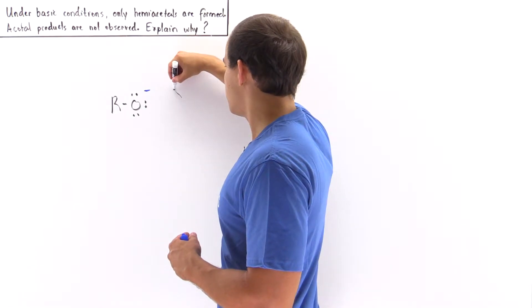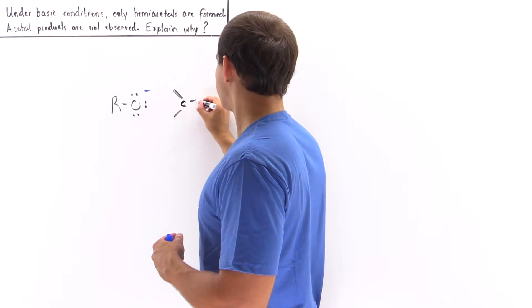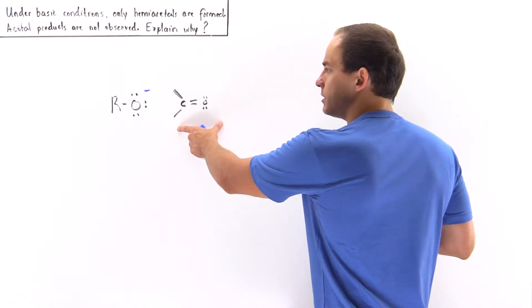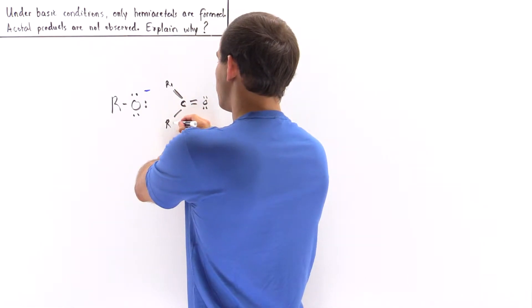We also have our carbonyl group. So let's draw the carbonyl molecule. This is our carbonyl group and let's label this group as R1 and this group as R2.